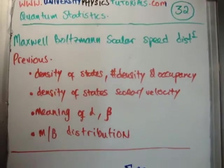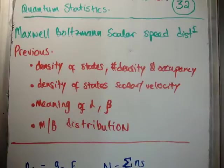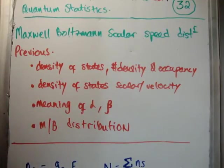The previous videos to this one are density of states, number density and occupancy. I did quite a few videos on the density of states in scalar and velocity space. I discussed the meaning of alpha and beta, and I also discussed the Maxwell-Boltzmann distribution function. I won't be proving any of these again, I'm just going to be using all of these results in order to do the Maxwell-Boltzmann formula.